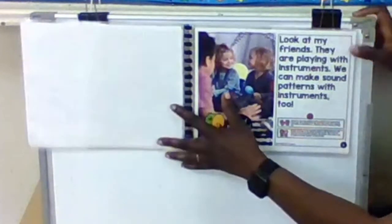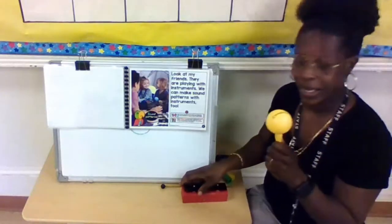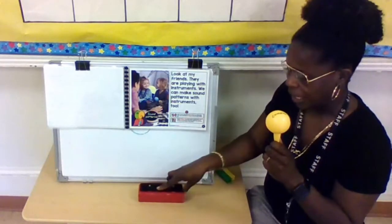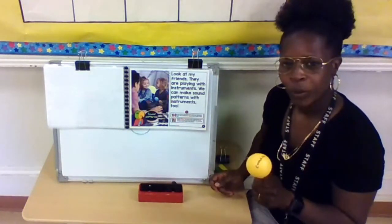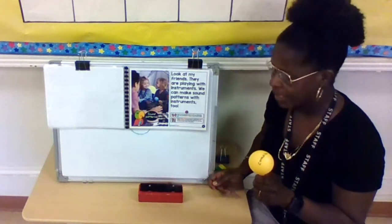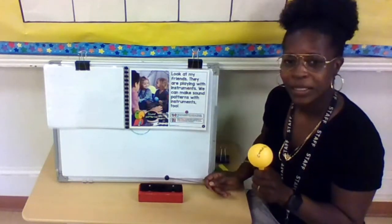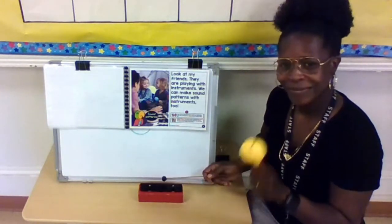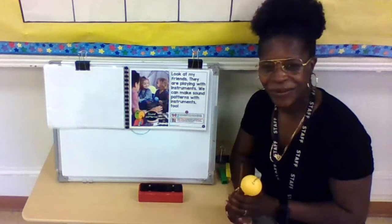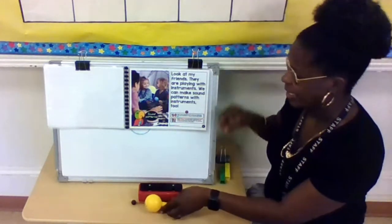Look at my friends here. They are playing with instruments. We can make sound patterns with instruments too. So my friends, Miss Council is going to try to do a sound pattern with instruments. So I have my maraca here and I have my telephone here. Ready? What comes next? Right? That's our phone. What comes next? What comes next? Wasn't that cool? See, you can make patterns with many different things.